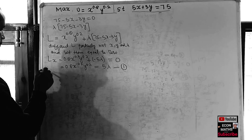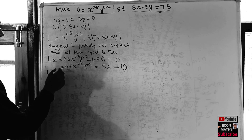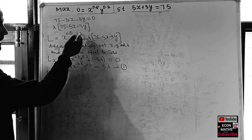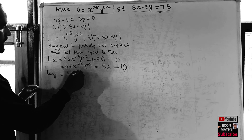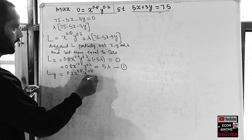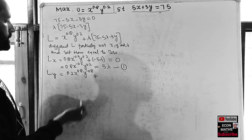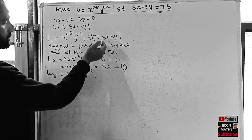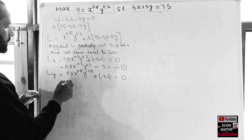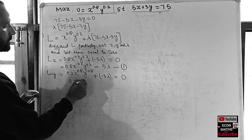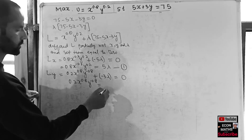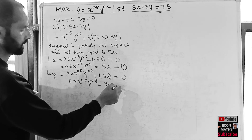Differentiating L partially with respect to y: we get 0.2 * x^0.8 * y^(0.2-1) = 0.2 * x^0.8 * y^(-0.8). The lambda*75 and lambda*(-5x) terms give 0, and lambda*(-3y) gives -3*lambda. Setting equal to zero: 0.2 * x^0.8 * y^(-0.8) = 3*lambda. Let this be Equation 2.